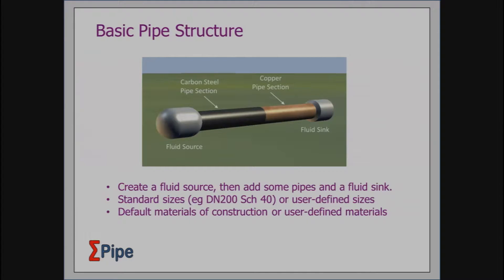At the most basic level, you lay down a fluid source of some type, instruct what kind of fluid is in it, what the temperature and pressure are. Then you lay down a pipeline system — this is a simple one with two sections, one in mild steel and one in copper. Then you lay down a fluid sink, which is a constant pressure black hole into which the fluid disappears. You tell it to calculate what flow you're going to get. You can select standard or custom pipe sizes, and default or user-defined materials of construction. For example, if you want an unusual roughness factor, you define a new version of mild steel, assign the roughness factor, give it a name, and use that material.